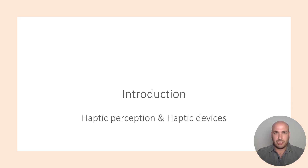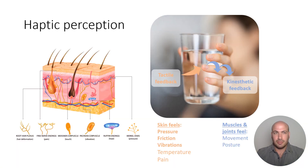Let's start with a brief introduction about the way we sense objects and devices that can recreate this sensation. We have two systems involved in our sense of touch: the tactile feedback system, which is based on the mechanoreceptors in our skin, which can sense pressure, friction, and vibrations; and the kinesthetic or cutaneous feedback system that can sense movements through our joints and forces through our muscles.